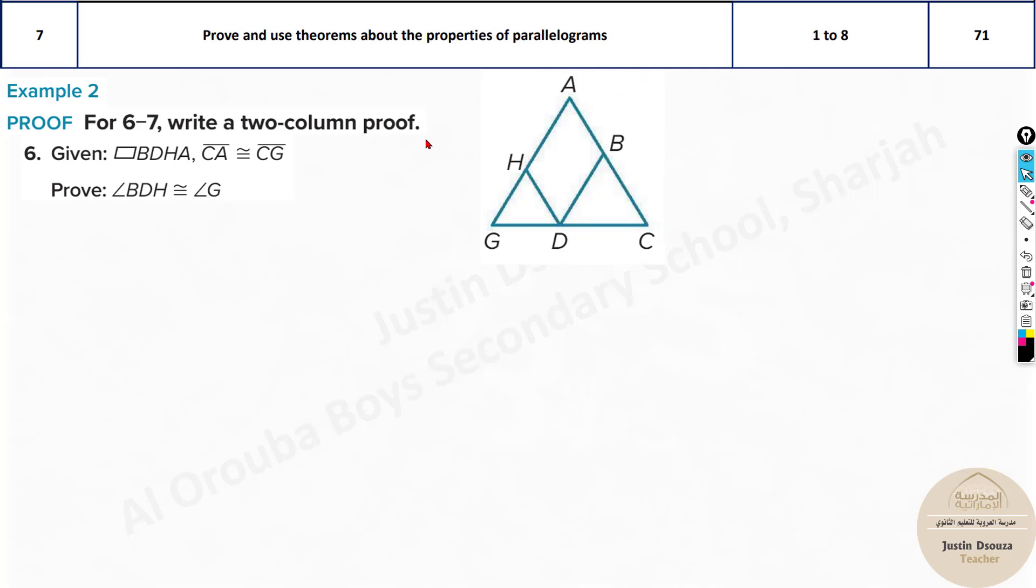Now we go to the sixth problem. It is to prove. What do we have to prove? This is the given thing. They have told us BDHA. This is very important. You know, proving problems - see what is there, visualize it and then try to solve it. B over here. BDHA. That's a parallelogram. Very nice. This symbol is parallelogram. So it's something like this. We know this is a parallelogram and they have told CA. What is CA over here? This side and CG is this side. They are congruent. This is equal to this.